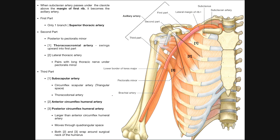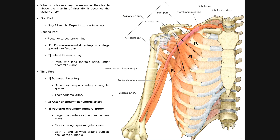In the past few videos, we've been talking a lot about the structures in the axilla in a lot of detail, and we keep talking about the axillary artery. What I want to do here is show you how the axillary artery is divided up, where it starts and where it ends, and also talk about the branches that come off of it.